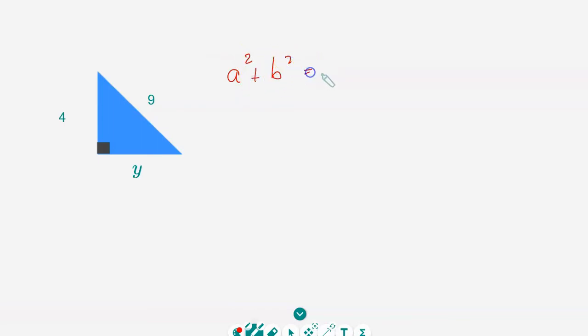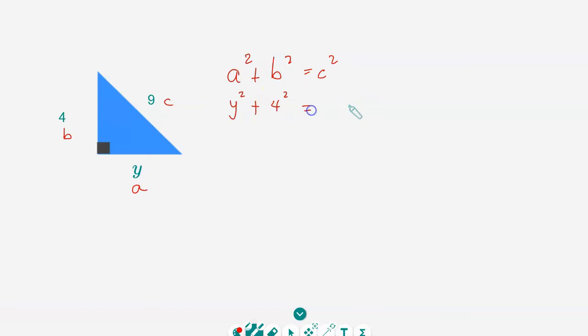Let's try another problem where the shortest side is unknown. As always, we write the formula: a² + b² = c², where c is the hypotenuse. You can label any side as a or b, so in this case y is your a and four is your b, and the hypotenuse is nine. So we have y² + 4² = 9².